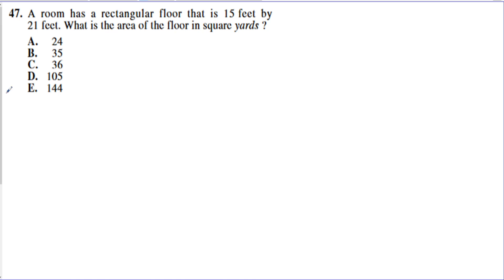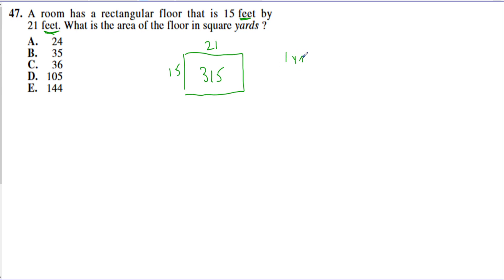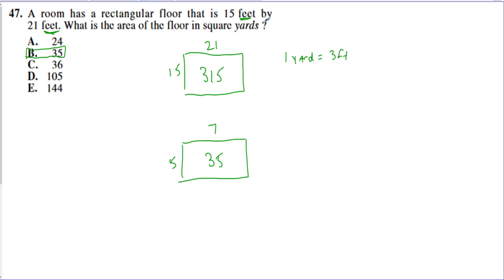Problem 47: A room has a rectangular floor that is 15 by 21 feet. The question asks for the area in square yards. It seems simple — 15 times 21 is 315 — but the trick is that the dimensions are given in feet. Since 1 yard equals 3 feet, divide each dimension by 3 to get 7 by 5, which gives 35 square yards. Be careful with unit conversions.